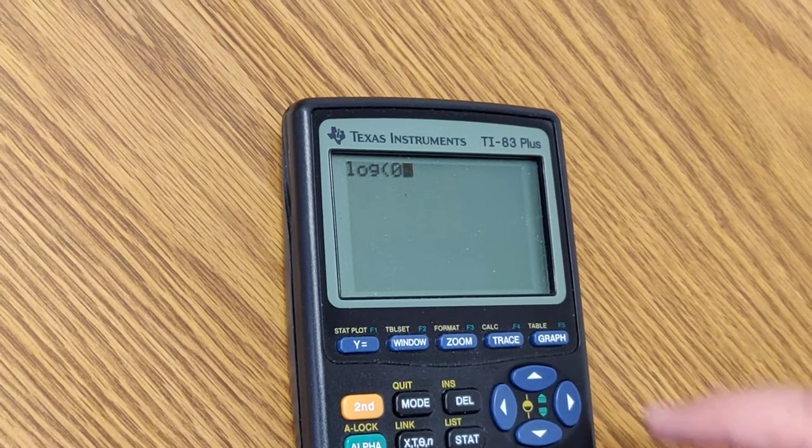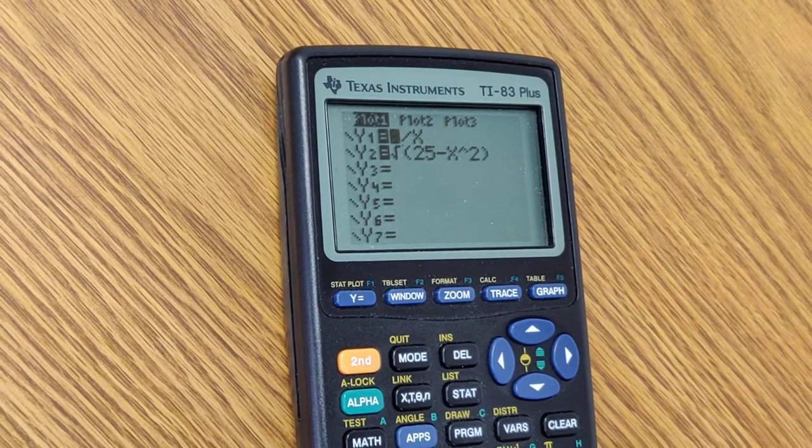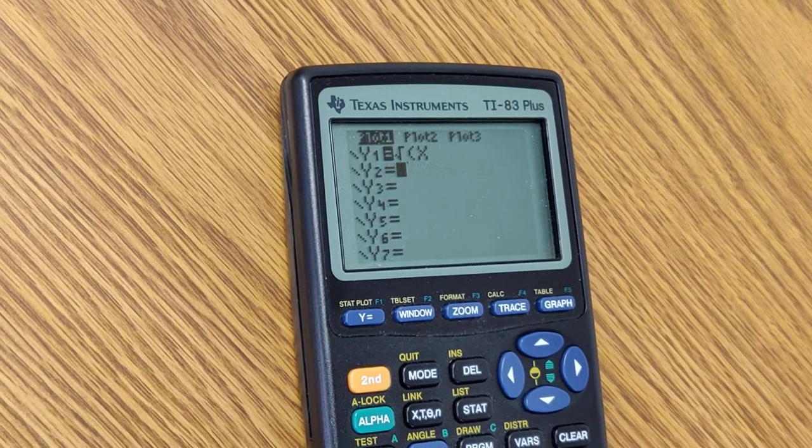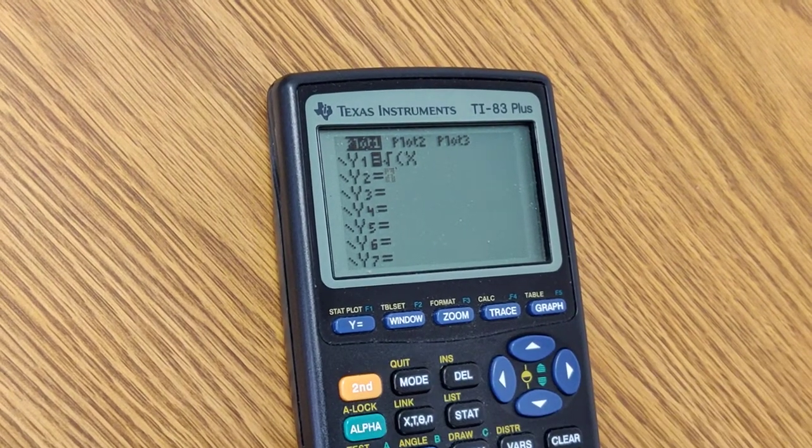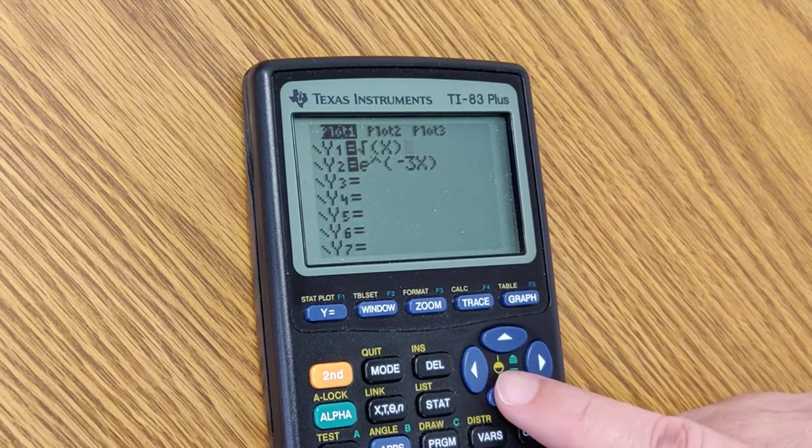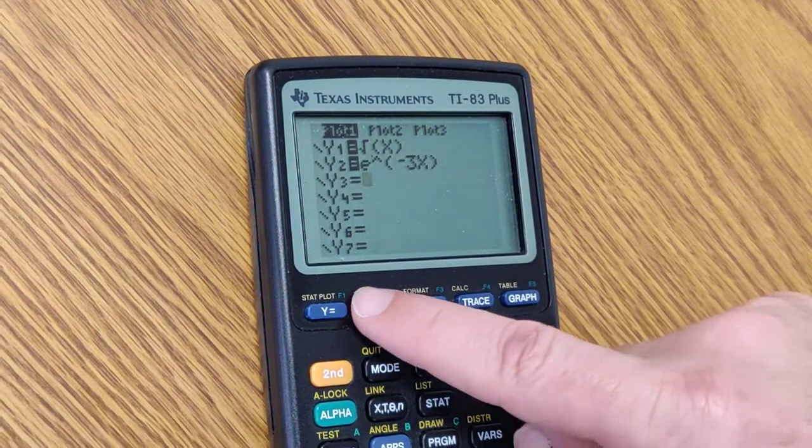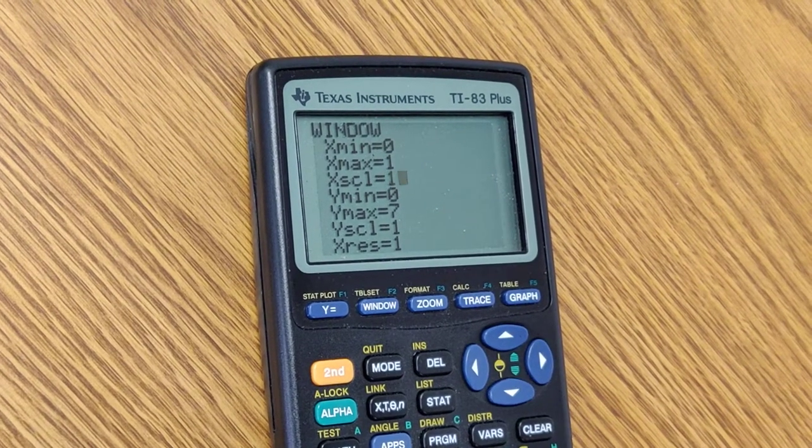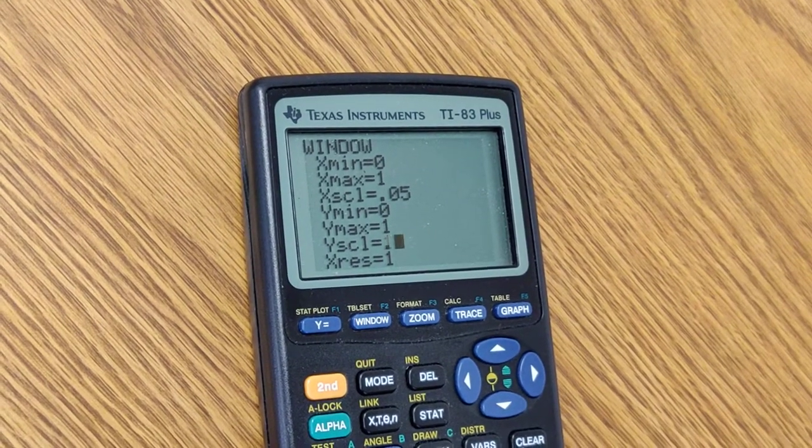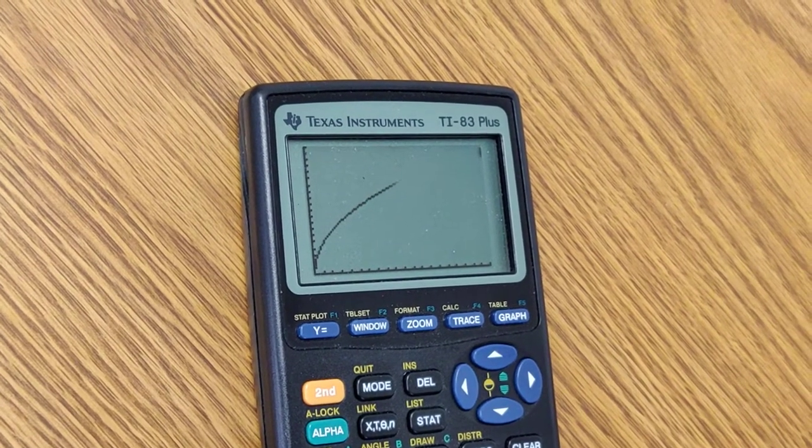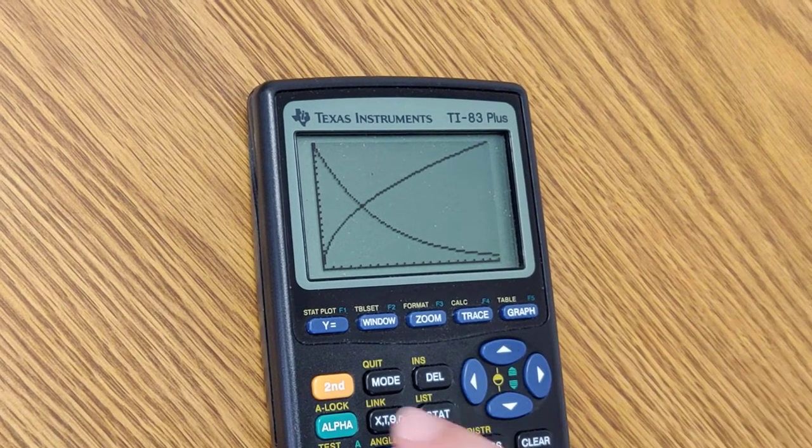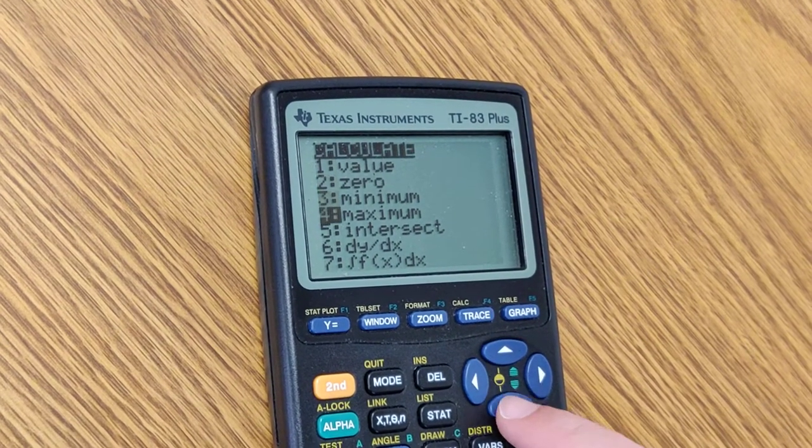Turn your calculator on. Go to y equals and enter second square root of x. And then enter e raised to the power of negative 3x. Be smart. Change your window right now. If you look at the region given to you, you'll notice that it is between 0 and 1. We're going to give it a scale of 0.05. Again, 0 to 1 and a scale of 0.05. We're going to graph. There is y equals square root of x. There is e to the negative 3x. And what we're going to do now is we're going to calculate the point of intersection.